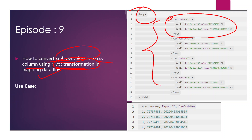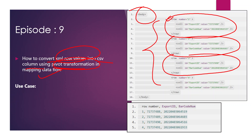All the data is contained within this property called body. Inside this body property, we have something called row number, which is used to segregate the data. Basically, we have four records here. Each of those records has a different row number. Inside this row number property, we have two sub-properties: ID and value. For each row number, there are two IDs — one is export ID and another one is barcode number ID. Export ID is having this value, barcode number is having this value.